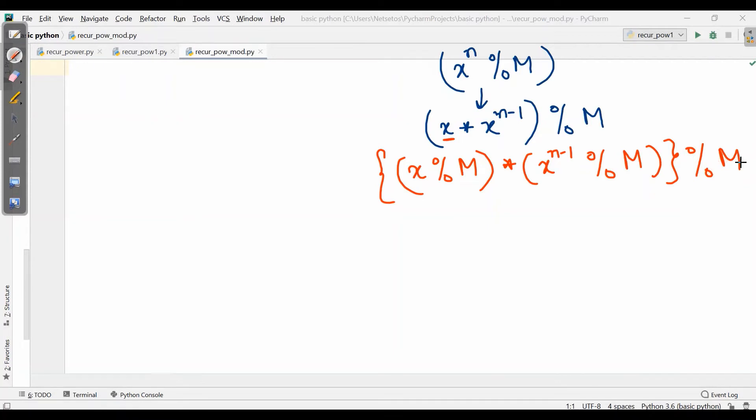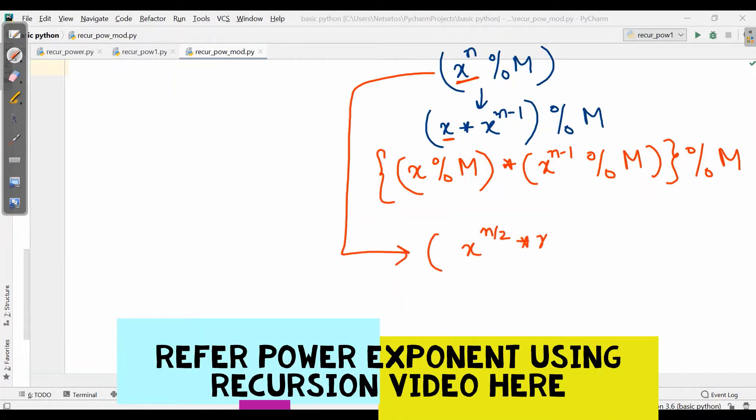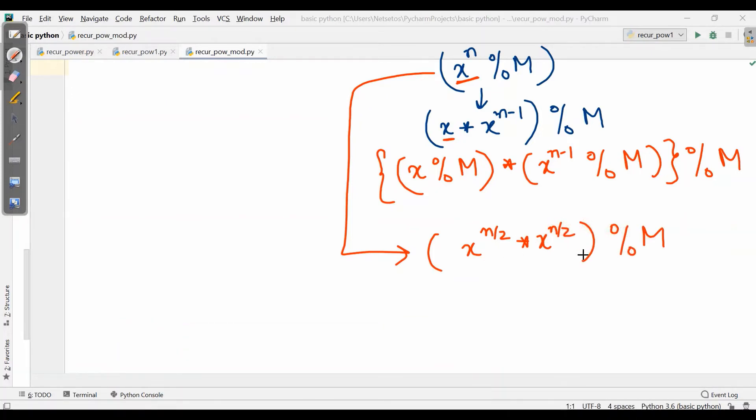Similarly if we have an even number, we can calculate it by x to the power of n by 2, into x to the power of n by 2, modulus M. I can write x to the power of n by 2 modulus M, then the other one x to the power of n by 2 modulus M, and then collectively modulus M.